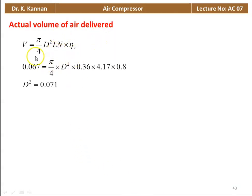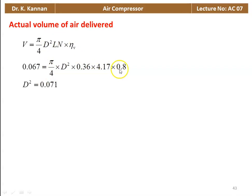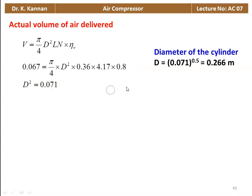Actual volume of air delivered V = (π/4) × D² × L × n × volumetric efficiency. Substituting: 0.067 = (π/4) × D² × 0.36 × 4.17 × 0.8. Solving, D² = 0.071, so diameter D = √0.071 = 0.266 meter.